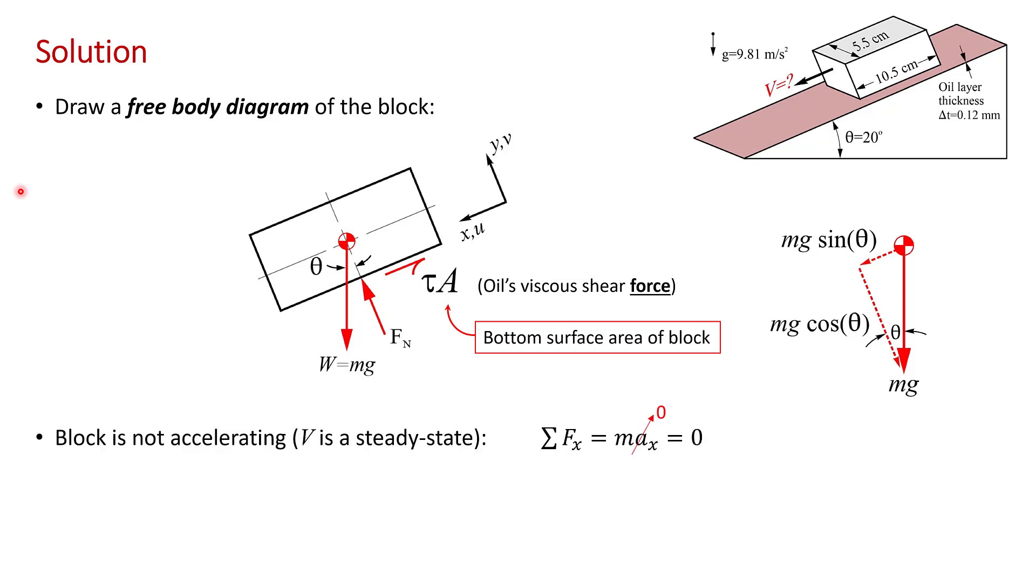You're told in the problem statement that you're looking for the steady state speed of the block, so the block is sliding at constant speed. It's not accelerating, so F equals MA equals zero because the acceleration is zero. Of course, we're interested in motion parallel to the plane, so here I've defined that direction as X, which is the direction of motion, and the direction perpendicular to the plane is Y. So in this problem, we have to set the sum of the forces in the X direction to zero.